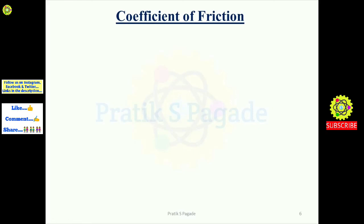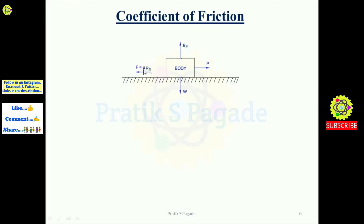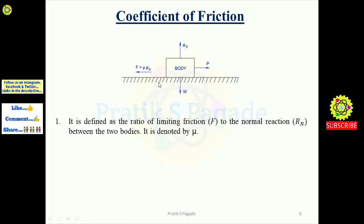Now, the coefficient of friction. As seen in the diagram, the force of friction is given by F equals mu times RN. Therefore, mu equals F divided by RN. The coefficient of friction is defined as the ratio of limiting friction F to the normal reaction RN between the two bodies. It is denoted by mu. So, mu equals limiting friction divided by normal reaction RN.